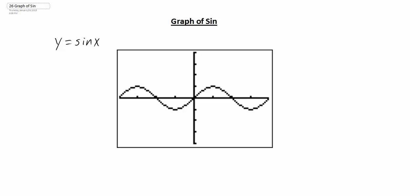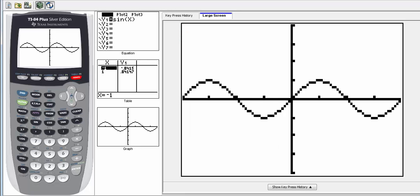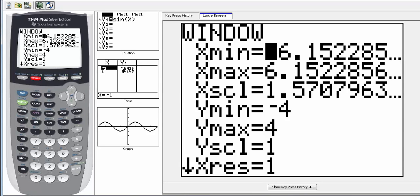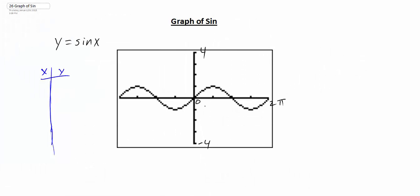If we were thinking of doing this by hand, we could make our xy chart. We know we're going all the way down to negative four, up to positive four, and we're going all the way out here to two pi. From the calculator, if we go into the window, notice the scale is the decimal 1.57, and basically what that decimal is, is the scale is actually pi over two. Then if we add another pi over two, we would get pi; add another and we get three pi over two; and then four pi over two, which would be two pi.